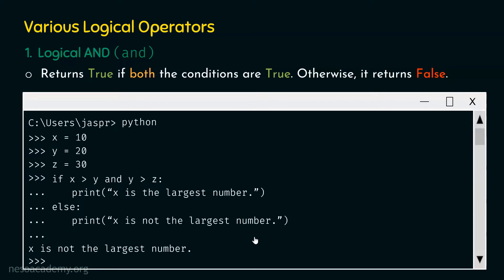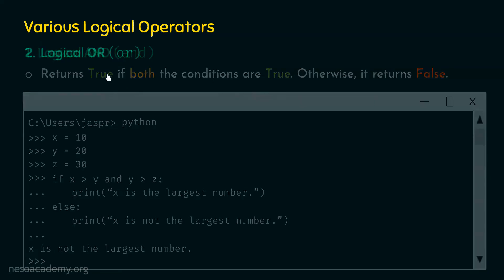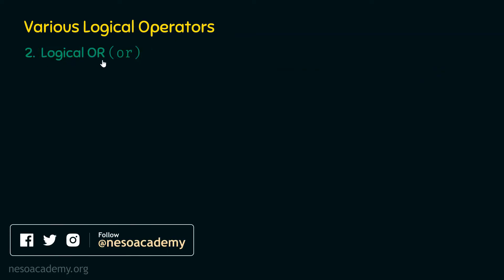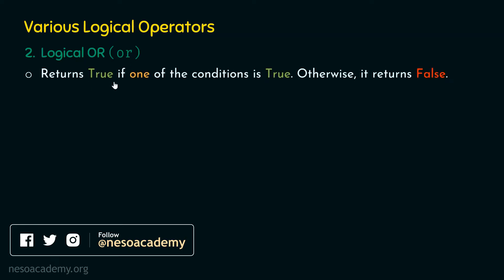This is how we can use the AND operator, also called the logical AND operator. Now let's move on to the next operator, which is logical OR. Logical OR is denoted by the 'or' symbol. It returns true if one of the conditions is true; otherwise it returns false.